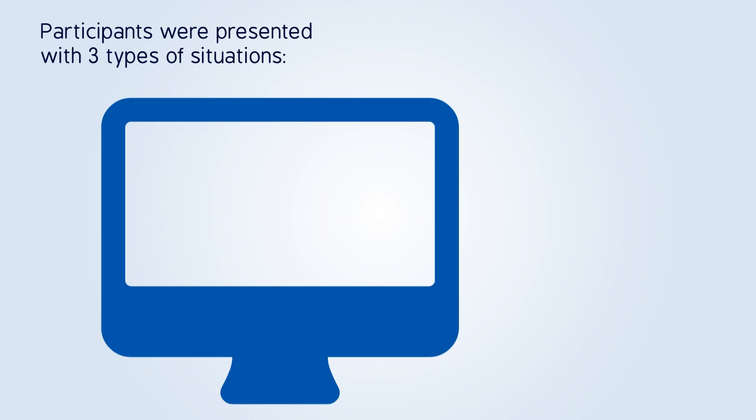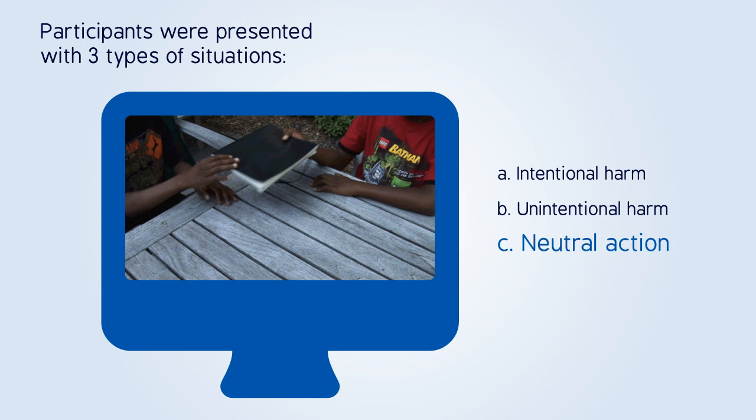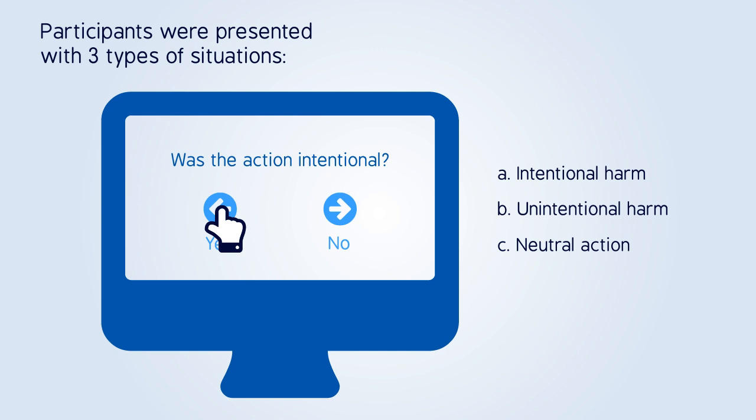Participants were presented with three types of situations in which one person inflicted upon another: intentional harm, unintentional harm and neutral actions. After watching the situations, the participants indicated whether or not there was intentional harm.